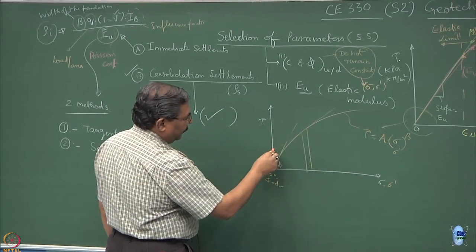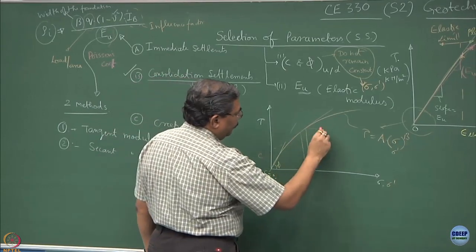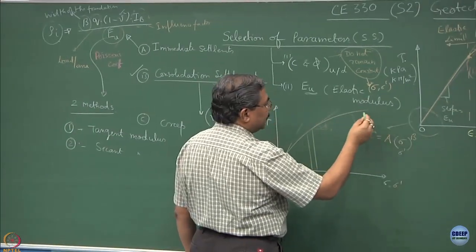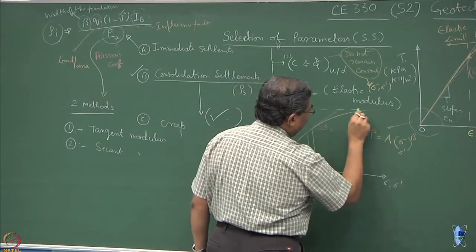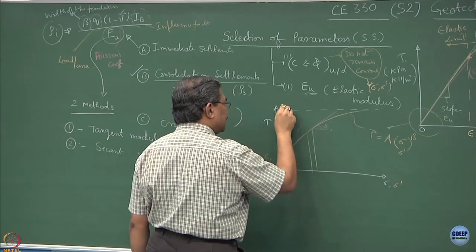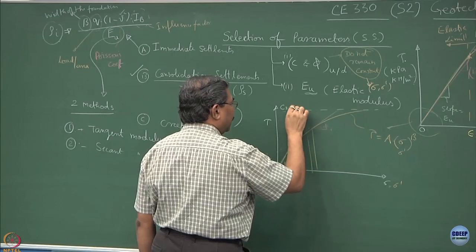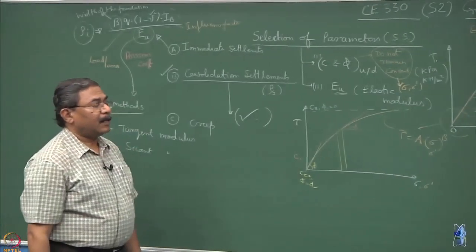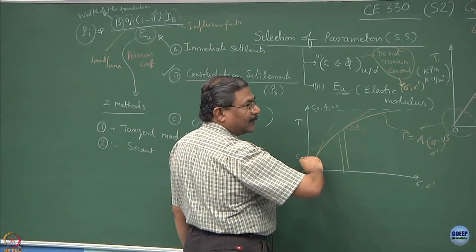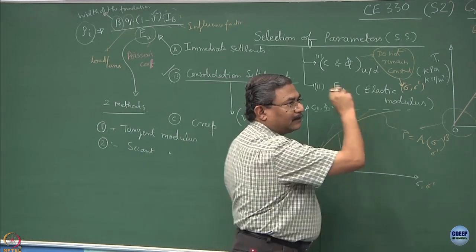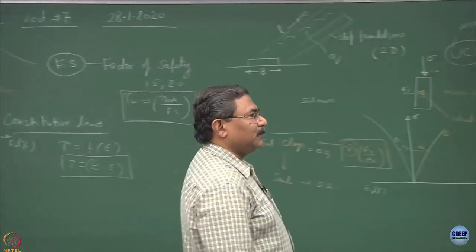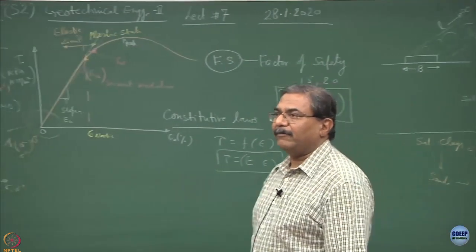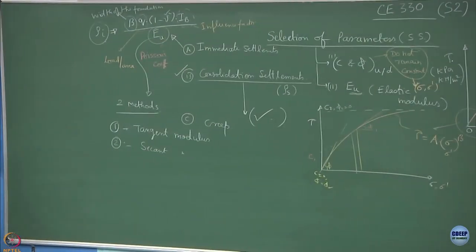What happens subsequently? As you move on with high stresses, a situation comes where c vanishes, phi vanishes, and c prevails only. Are you realizing this important thing? There is a transformation from a pure frictional material to a pure cohesive material. Did you understand this? That is the beauty of the material and the way we deal with it. There is nothing known as c and phi constant.